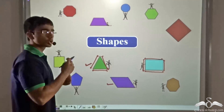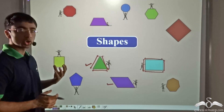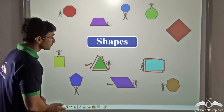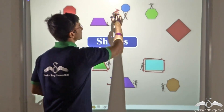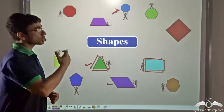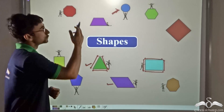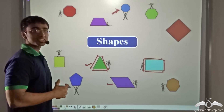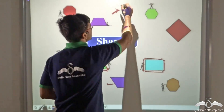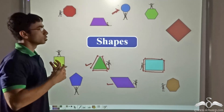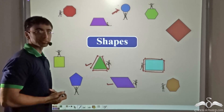But if you look closely, can you tell me which one is the odd one out among all these shapes? That's right. The odd one out is this particular blue circle. Why? Because all the other shapes are made up of line segments. But if you notice closely, the circle is not made up of any line segments — it is completely round in shape. So let us talk about those shapes which are made up of line segments.